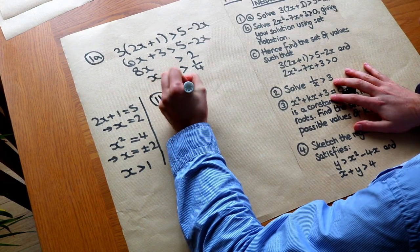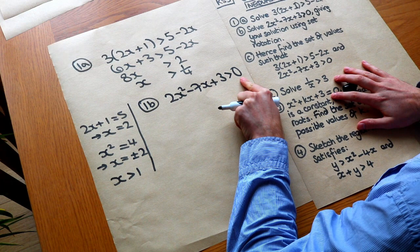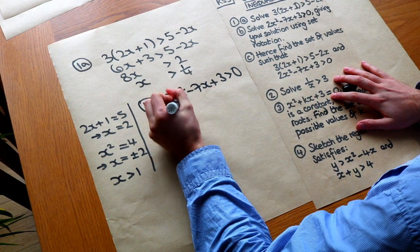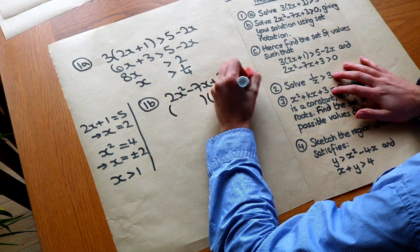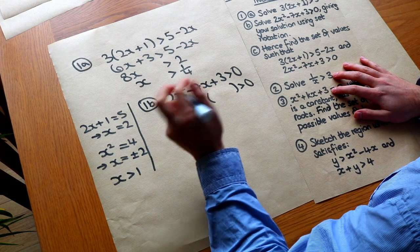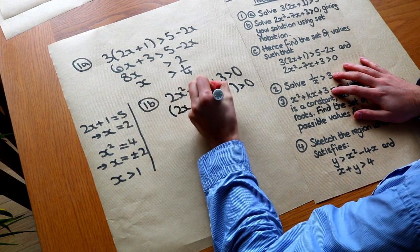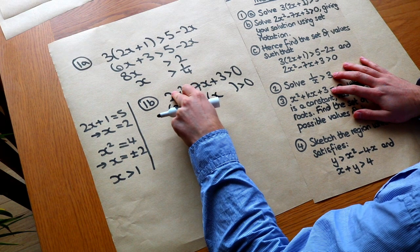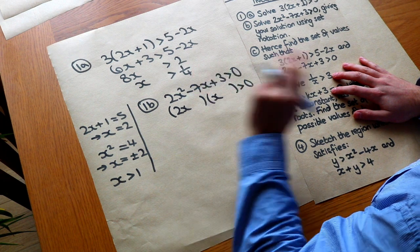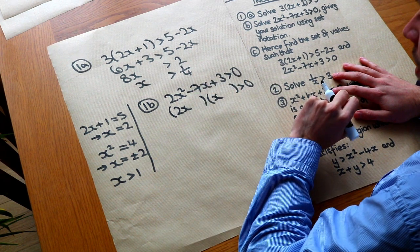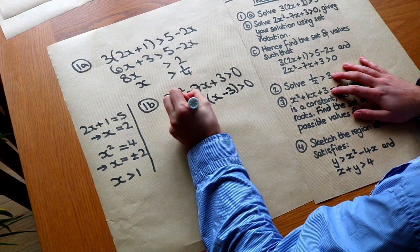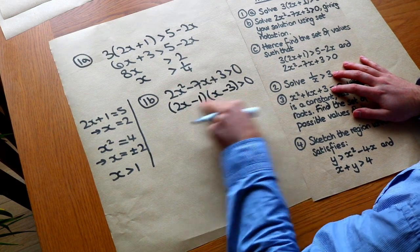We want to solve this quadratic inequality. First, make sure 0 is on one side, then factorise. Factorising by inspection: we get (2x − 1)(x − 3). That's because 2x times x gives 2x squared, and we need the numbers to multiply to give +3 - so minus 3 and minus 1 work, giving minus 6x and minus x combined, which is the correct middle term.